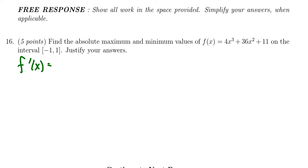We're going to get f'(x) = 12x² + 72x. The derivative of 11, of course, is 0. And we need to set this equal to 0 to find the critical numbers. There's no place where this derivative would be undefined.